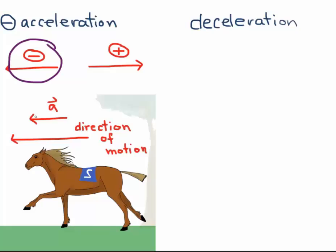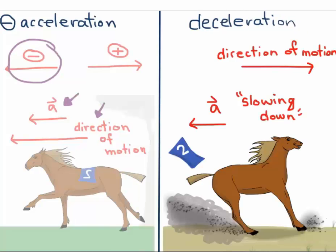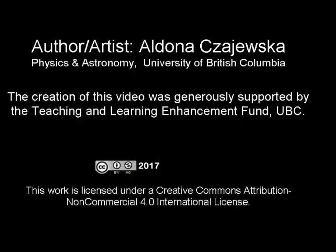For deceleration or slowing down we need the direction of motion and the acceleration in opposite direction. As you can see the acceleration is negative in both cases but only in the right case leads to slowing down.